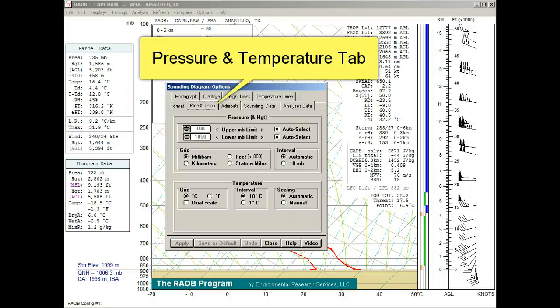The Pressure and Temperature Tab: these options control the X and Y axis labels. The pressure and height section permits specification of the upper and lower boundaries of the sounding diagram, or let RAOB automatically adjust the diagram for each plotted sounding.